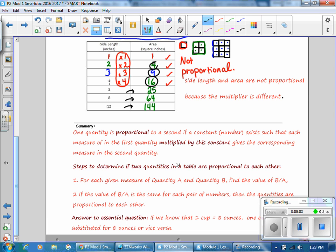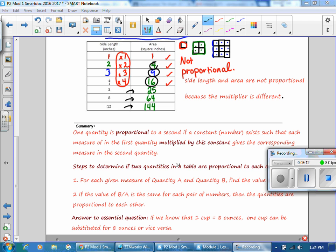And the answer to the essential question is, if we know that one cup equals 8 ounces, one cup can be substituted for 8 ounces or vice versa. So go back and read the essential question and then the answer. That concludes lesson 4. Thank you.